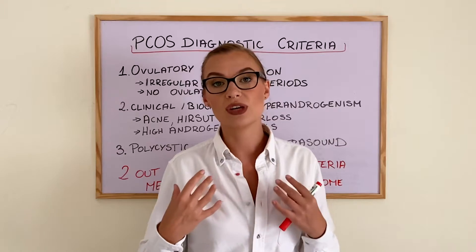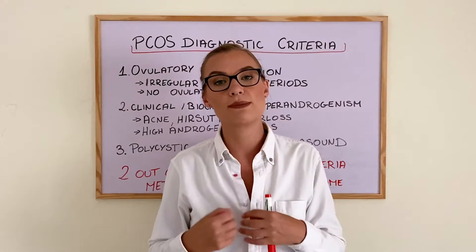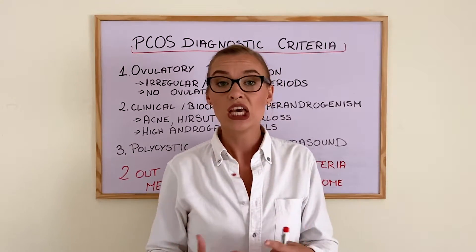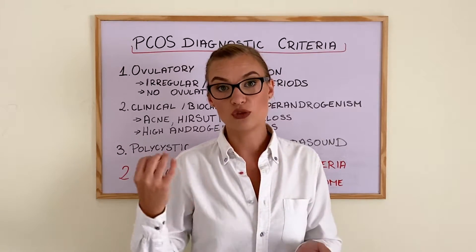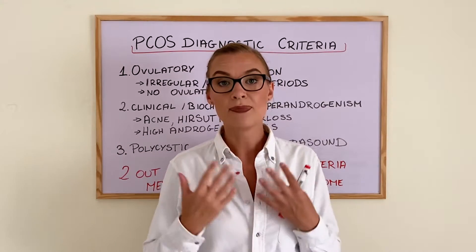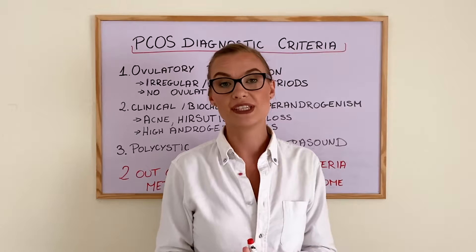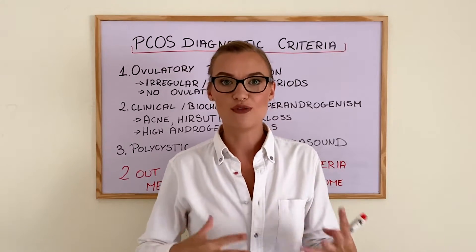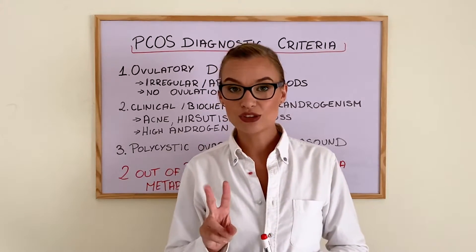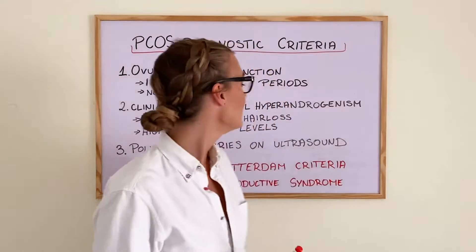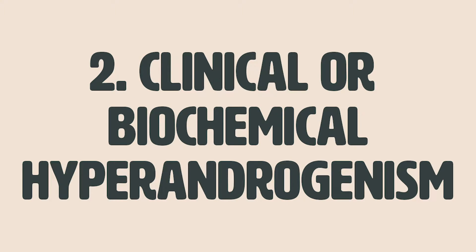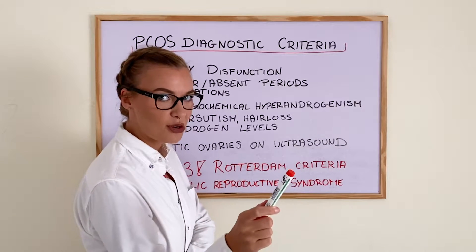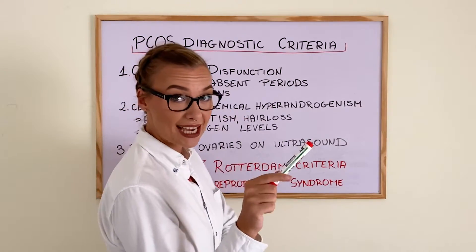This can also be tested with your hormone levels. Sometimes you can be prescribed or asked to do a urine test to check if you're ovulating, and your doctor will be able to tell. The second criteria is clinical or biochemical hyperandrogenism — it sounds very complicated, but let me explain what it actually is.